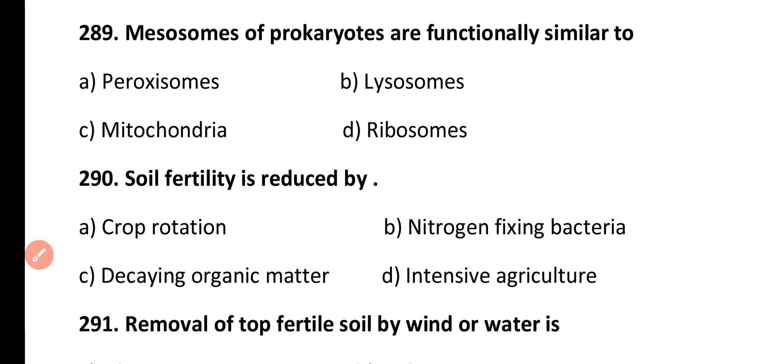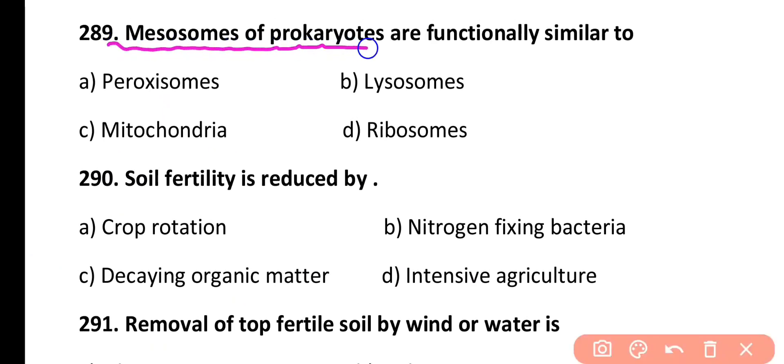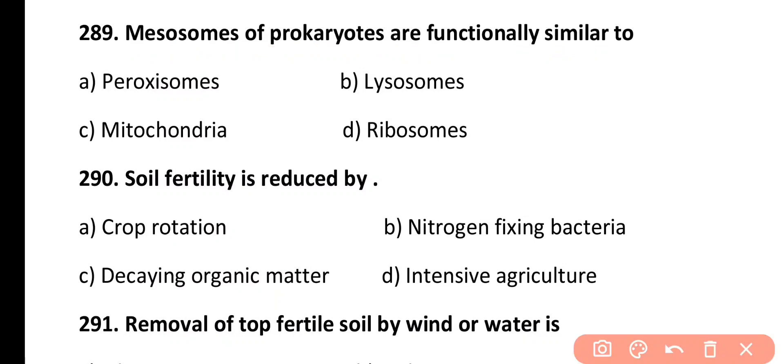Question 289. Mesosomes of prokaryotes are functionally similar to: peroxisomes, lysosomes, mitochondria, or ribosomes. Correct answer is Option C. Mesosomes of prokaryotes are involved in respiration. Similarly, mitochondria are also involved in cellular respiration, so both are functionally analogous.